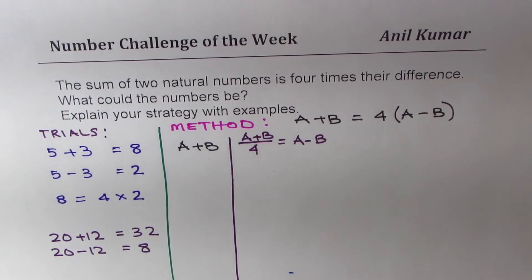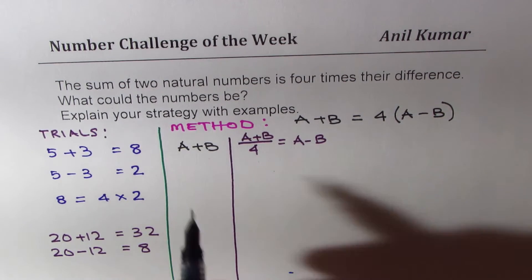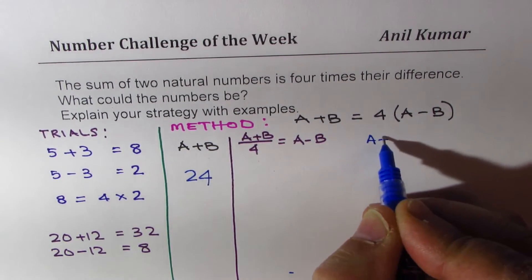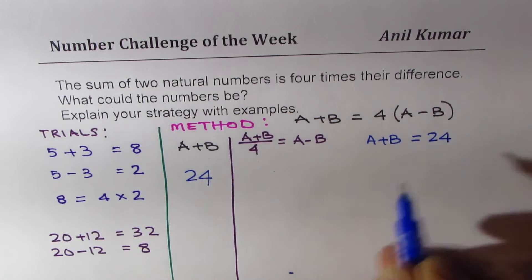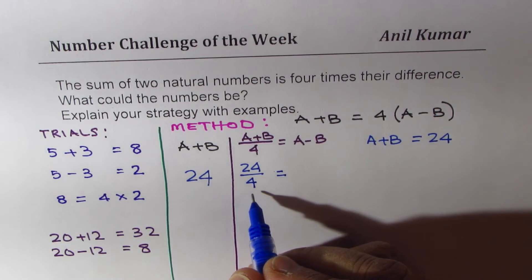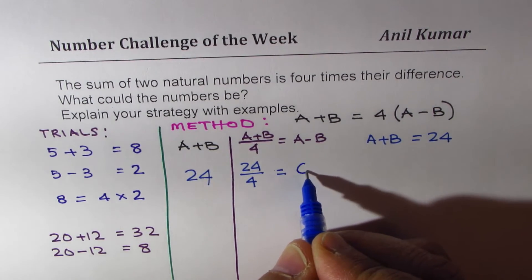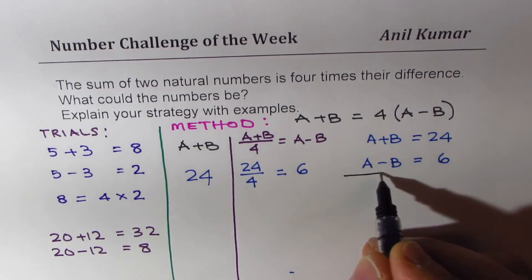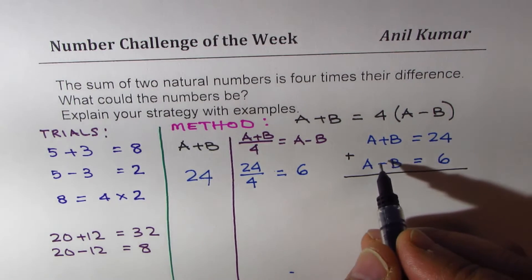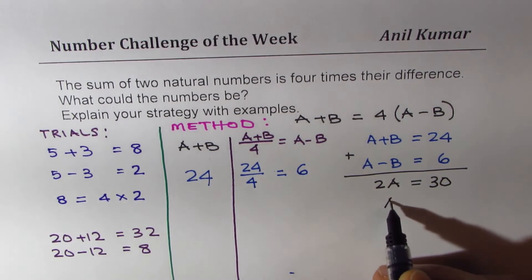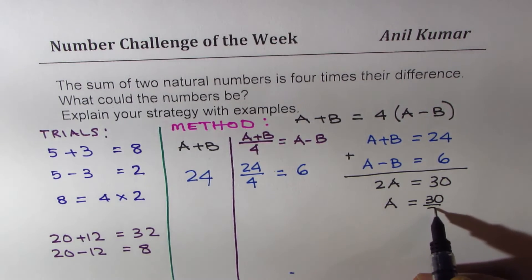To give you an example, if I take, let the sum be 24, let A plus B be 24. Now, one-fourth of 24, that is 24 divided by 4, is equal to what? 6 times 4 is 24, so that is 6. That gives us A minus B equals 6. Now, if I add them both, then B and B cancel, we get 2A. Twice A equals 24 plus 6, which is 30. And that gives you the value of A as 30 divided by 2 as 15.